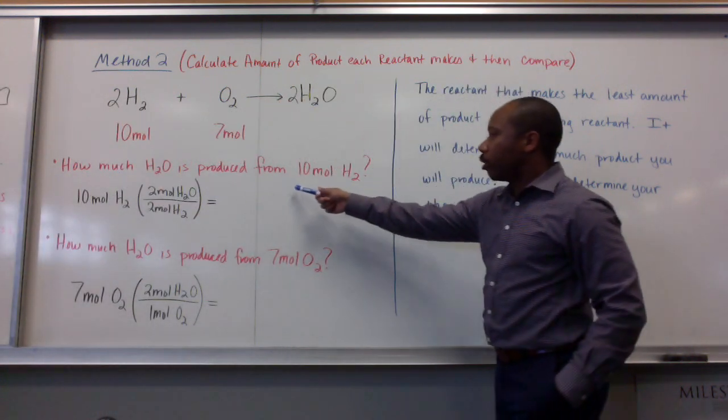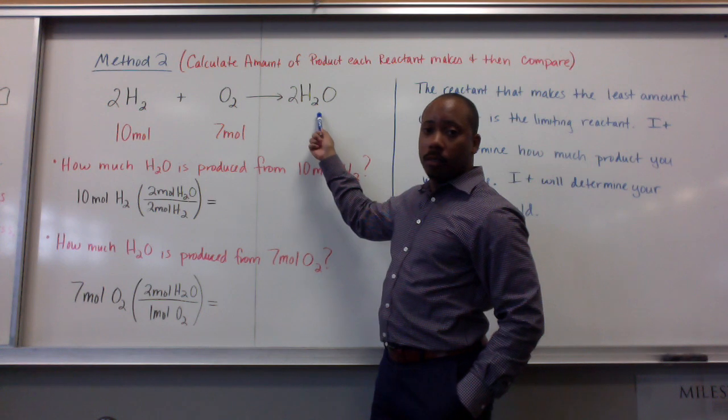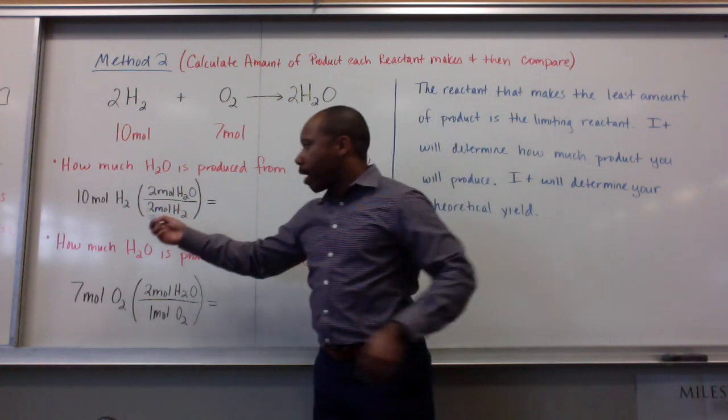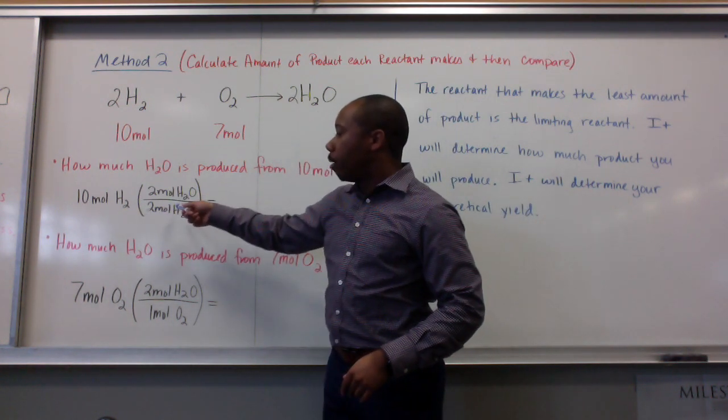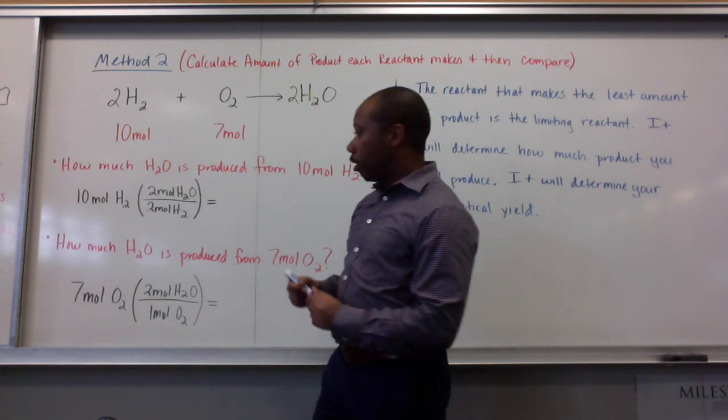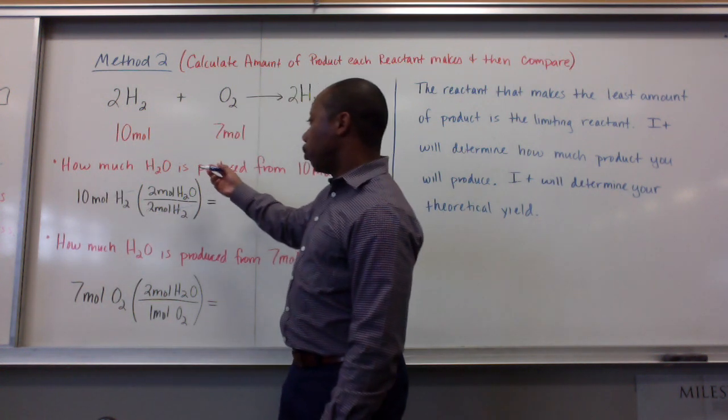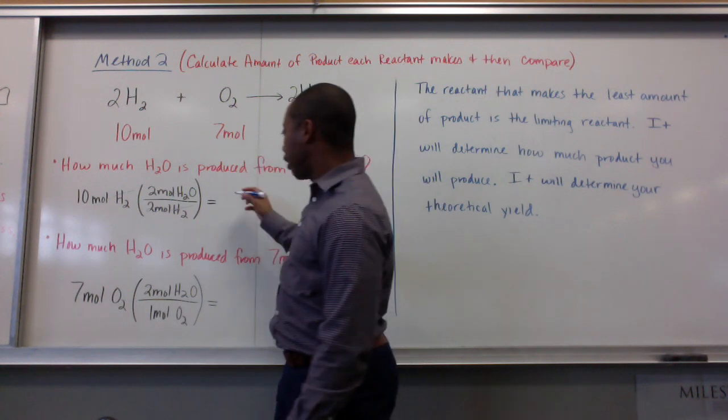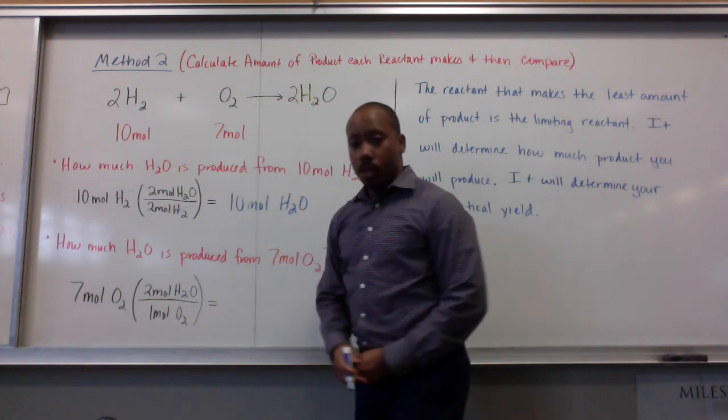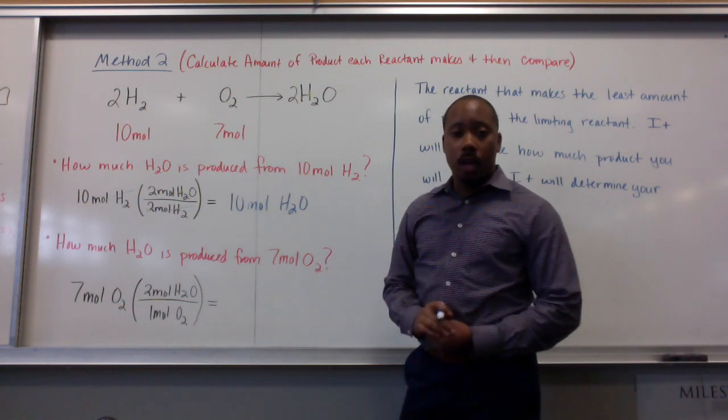Okay, so the first question is, how much H2O is produced from 10 moles of H2? So, you want to see how much of your product you get from one of your reactants. In this case, 10 moles of H2. I do my math, I have 10 moles of H2, I use my mole ratio here, 2 moles of H2 to 2 moles of H2O. Moles of H2 cancel, and then I'm left with 10 over 2, 10 times 2 over 2, which is just 10. Okay, that means nothing on its own. I have to compare this to what I get when I use oxygen gas.